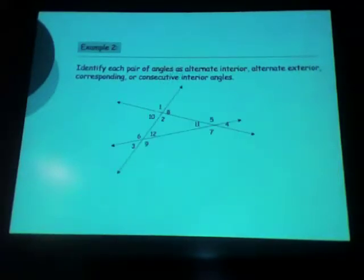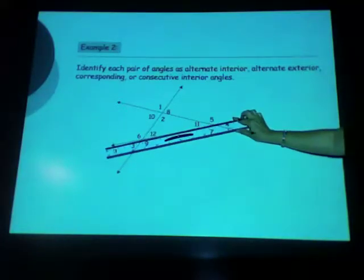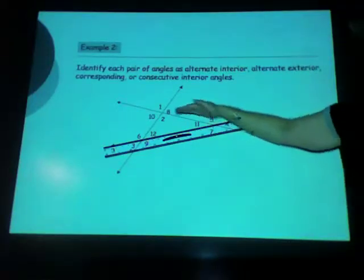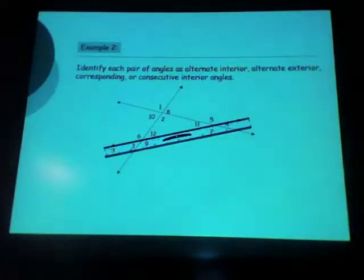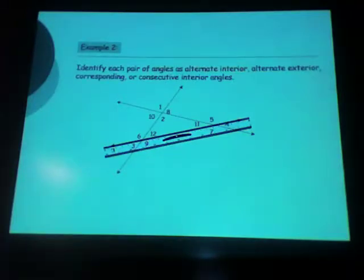So here you have a picture with essentially three transversals. If this is the transversal right here, what two lines is it intersecting? Those two lines — and they're not parallel, but you still have interior and exterior angles, alternate interior, alternate exterior, and corresponding angles. This is a different picture than the first one, and this is where your pencils or spaghetti noodles will become very handy.